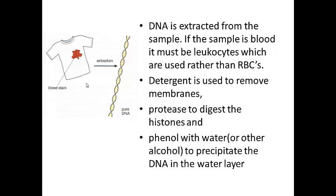How do we get the DNA out of those white blood cells? First of all, we remove the membranes, which are made out of phospholipids primarily, and we remove those with detergents, which will emulsify those phospholipids. Then our chromosomal DNA is associated with histone proteins — we need to get rid of those histone proteins and we do that with a simple protease. Then we precipitate the DNA out using really cold alcohols. You can use a phenol as well, which will precipitate the DNA out into the interface layer between the alcohol and the water.